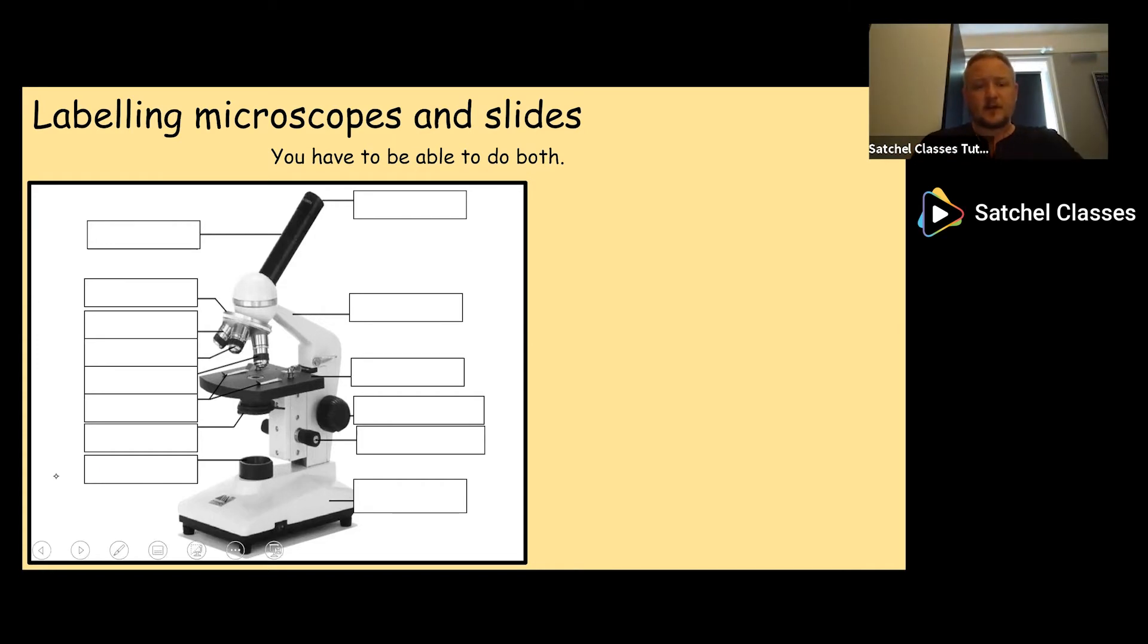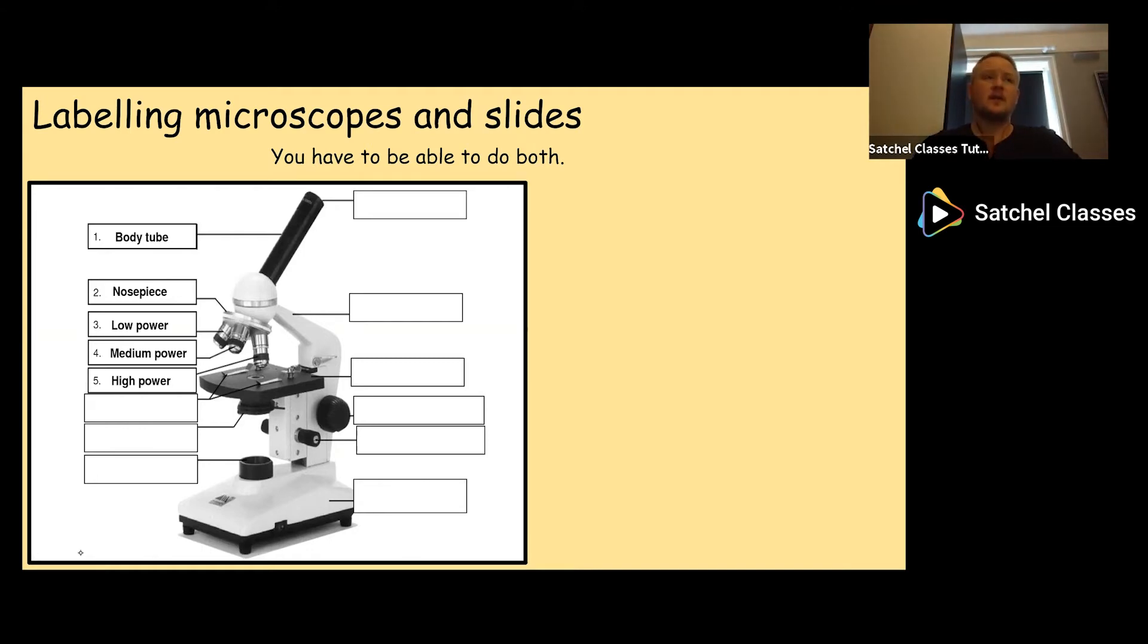Some of the things that we've got on there are the body tube, which connects the eyepiece lens to the microscope assembly, the nose piece, which is where the objective lenses are all stored, the low power lens, the medium power lens and the high power lens. You can twist these to switch between low, medium and high power lenses. For example, the one I use in my lab has 4 times low power magnification, 10 times medium power and 40 times high power. The stage clips are thin strips of steel that hold the microscope slide in place on the stage.